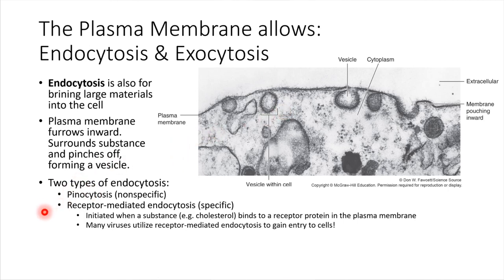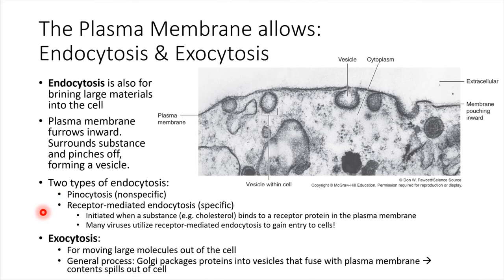Receptor-mediated endocytosis is more what we'll be focused on in this class. Also worth noting: there are a lot of viruses that gain entry to cells by this mechanism. A virus can come along, bind to the receptor, and as far as the cell knows it looks like a food molecule. So the cell brings it inside and then the virus suddenly has access to the inside of the cell. There are a number of viruses that gain entry to cells that way.